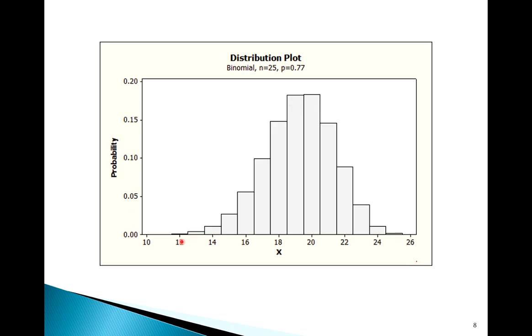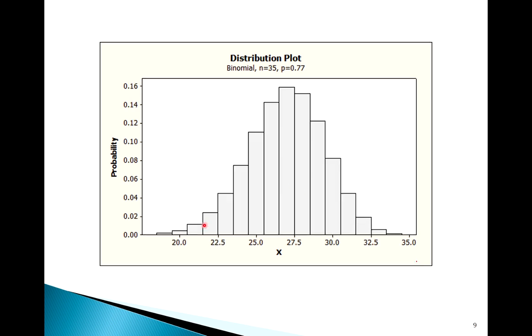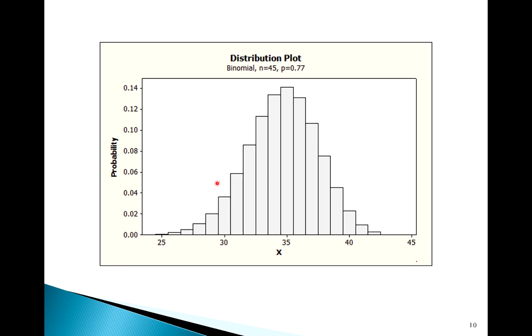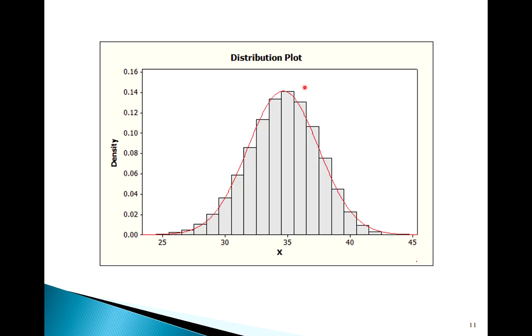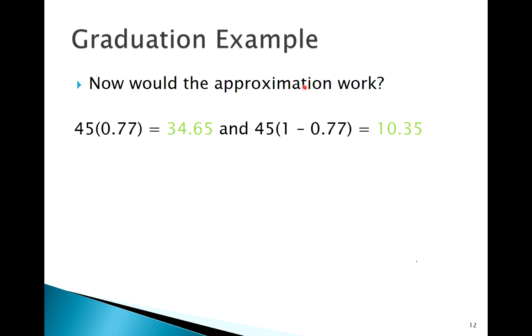What if I bump my sample size up to 25? So I'm going from 12 to 25. Looks pretty good, maybe still a little bit left skewed. 35, a little better, slightly left skewed. What about 45? So a binomial here with n equal to 45, p equal to 0.77. Looks pretty normal. I feel pretty good about overlaying a normal curve there and saying that normal curve fits pretty well.